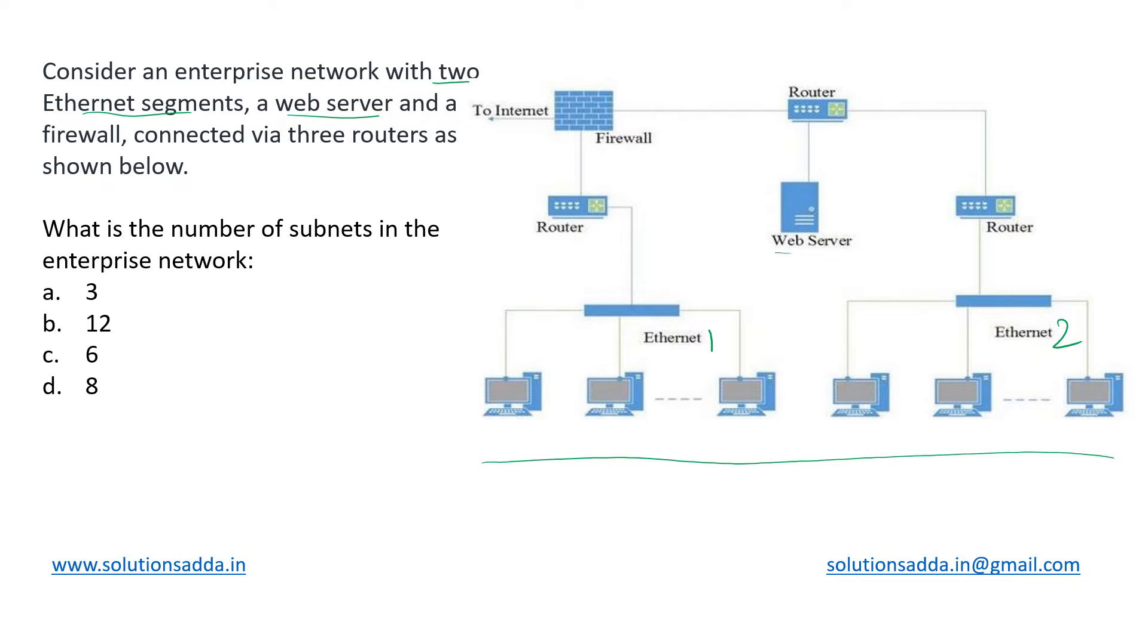There is a web server over here and a firewall connected to the internet and on the other side internally it is connected to three routers. Let us call them router 1, router 2, and router 3 respectively.